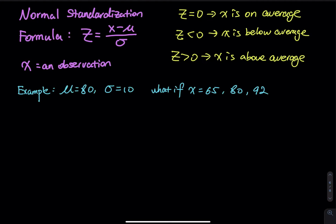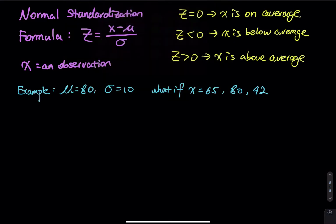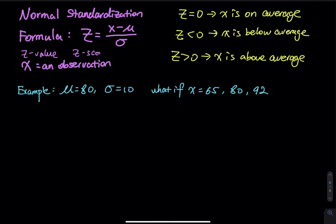X is an observation, mu and sigma - mu is the mean and sigma is the standard deviation. So the result, we call it z. The z has two names. You either call that a z value or z score, or you can call that a standardized score.